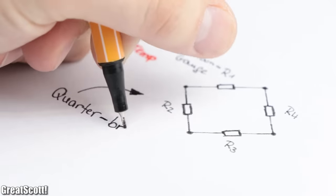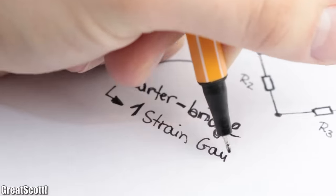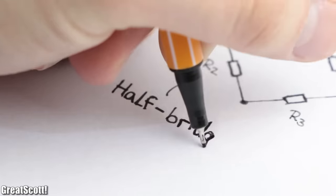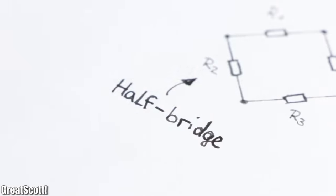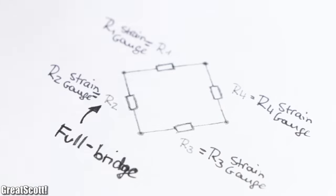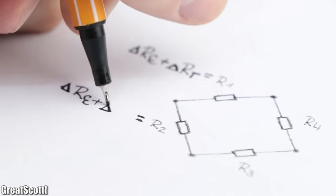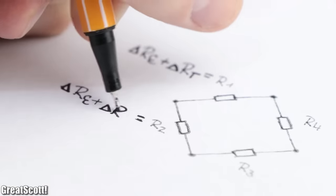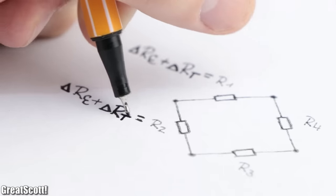That is why you usually avoid such a quarter bridge with only one strain gauge and instead utilize a half bridge with two strain gauges or a full bridge with four strain gauges. I always like to use the half bridge since both strain gauge resistances are influenced by the temperature,